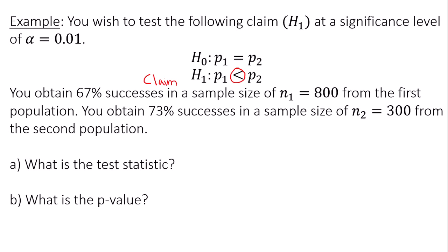You obtain 67% successes in a sample size of n1 equals 800 from the first population, and you obtain 73% successes in a sample size of 300 from the second population. I want you to find the test statistic and the p-value, then we'll come to a conclusion on the hypothesis test.